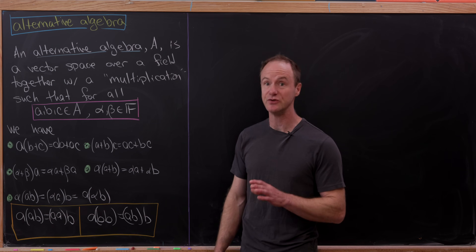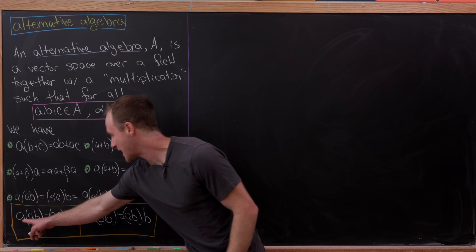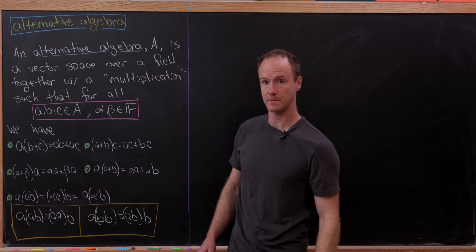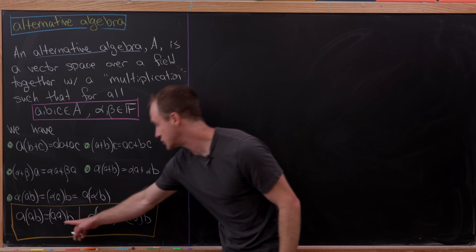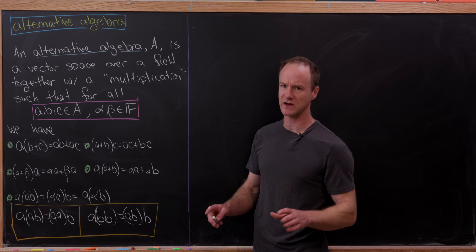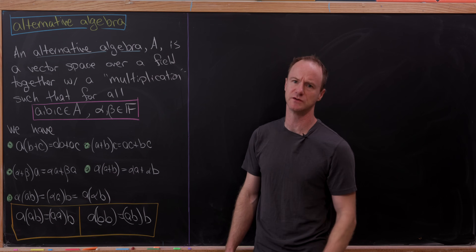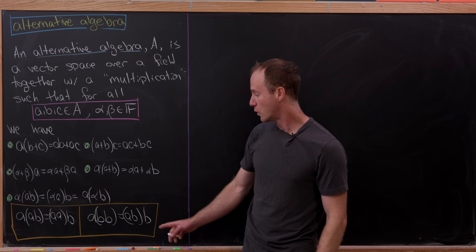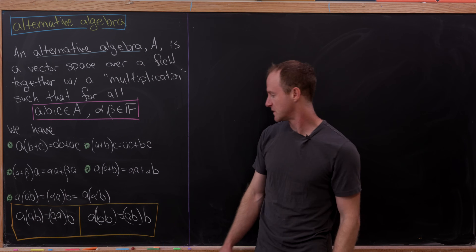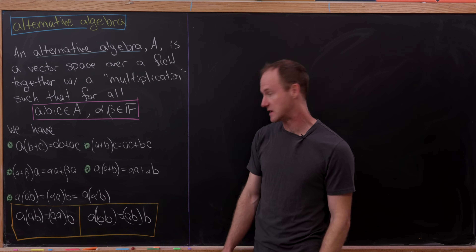Notice these two rules do not imply associativity. We have A times AB equal to AA times B, associating as written with those parentheses. We also have A times BB equal to AB times B.